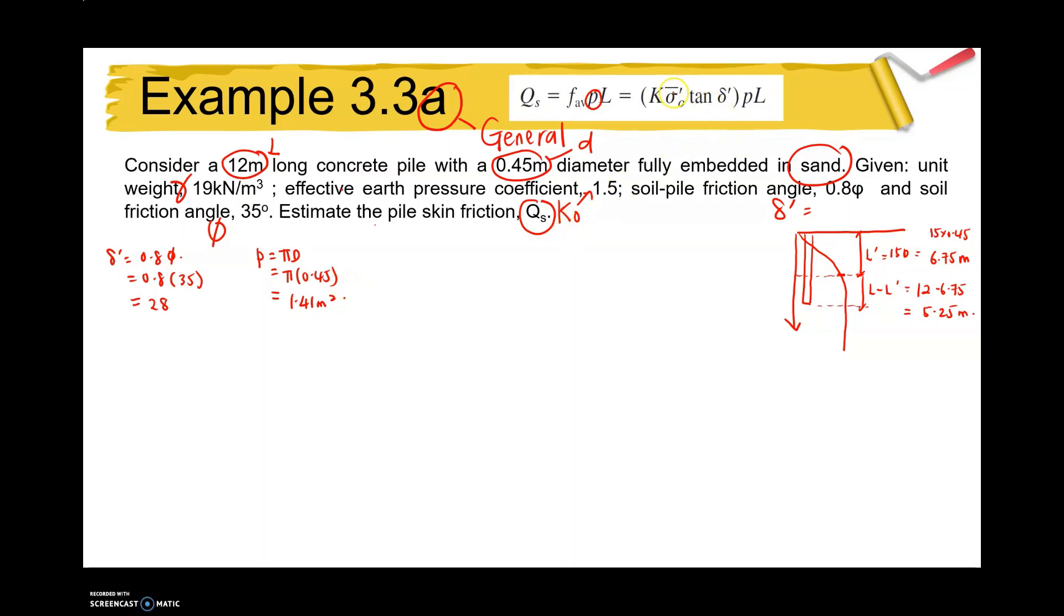Another unknown, K0 is given as 1.5. K0 equals 1.5, and the delta is given here. The L is 12 meters.